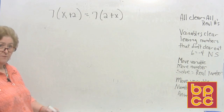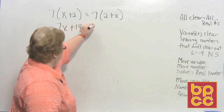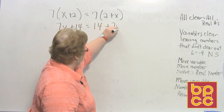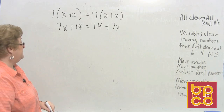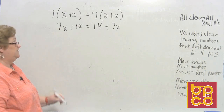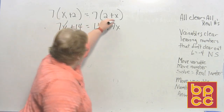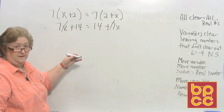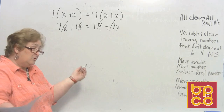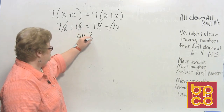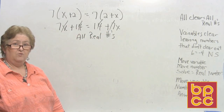Here comes your first one. After distributing and combining like terms, we have 7x + 14 = 14 + 7x. Always start with your variable. I'm moving my 7x's — if I subtract 7x they clear out, and the 14s also clear out no matter which way I go. Everything cleared out, so I say 'all clear' and you say all real numbers.